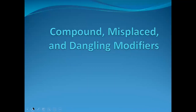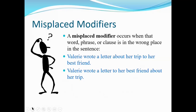We also need to talk about misplaced or dangling modifiers. 'Valerie wrote a letter to her best friend about her trip' versus 'Valerie wrote a letter about her trip to her best friend.' The second wording doesn't quite work — you'd say 'Valerie wrote a letter about her trip to visit her best friend.' The way to correct a misplaced modifier is to move it as close as possible to the word you want it to modify, which generally involves rewording the sentence.